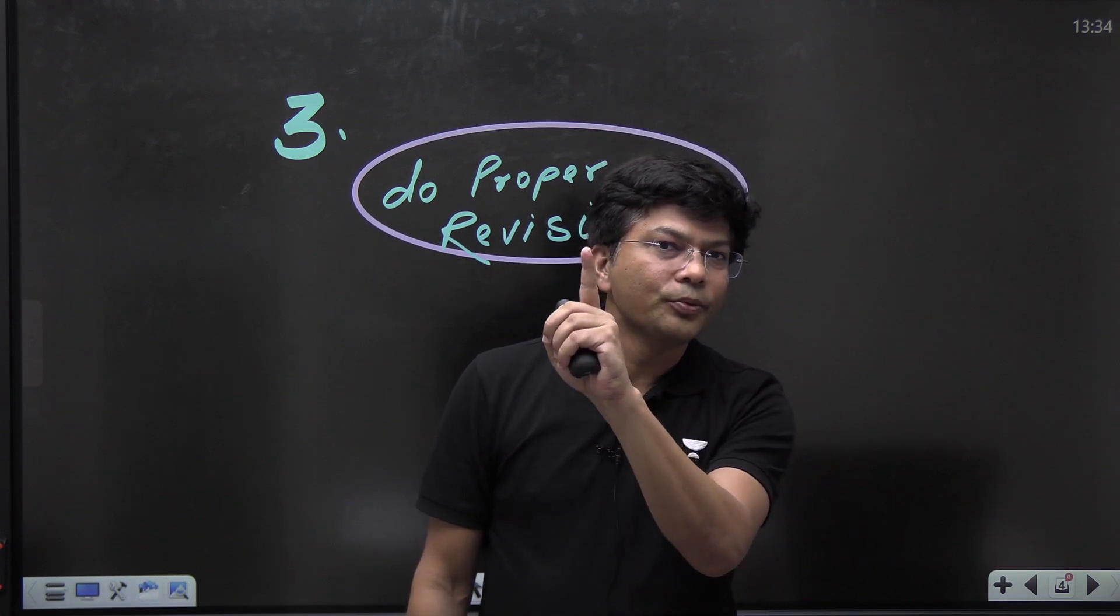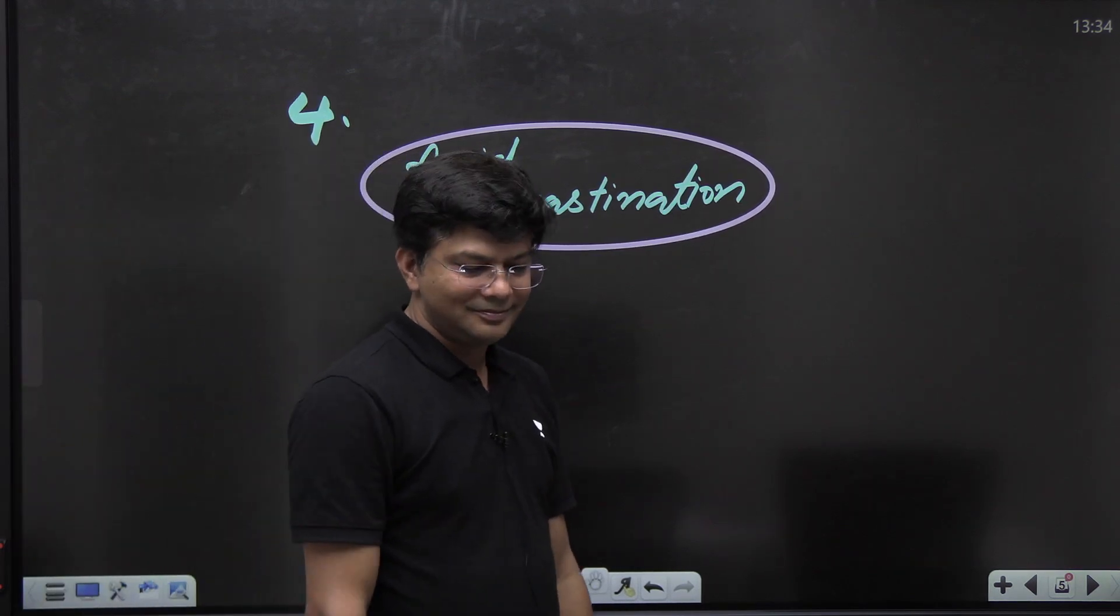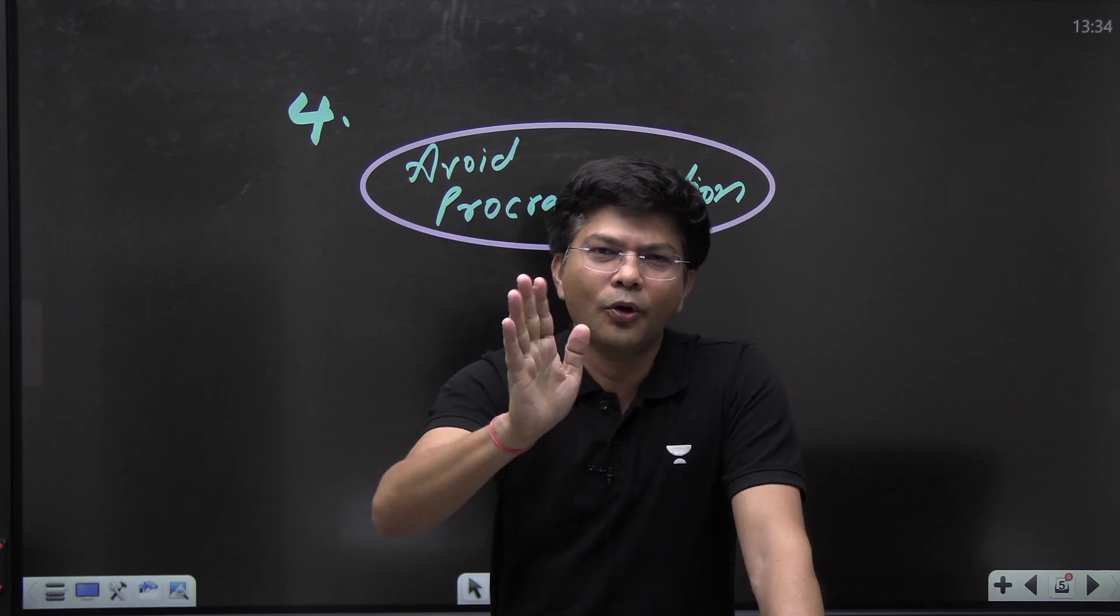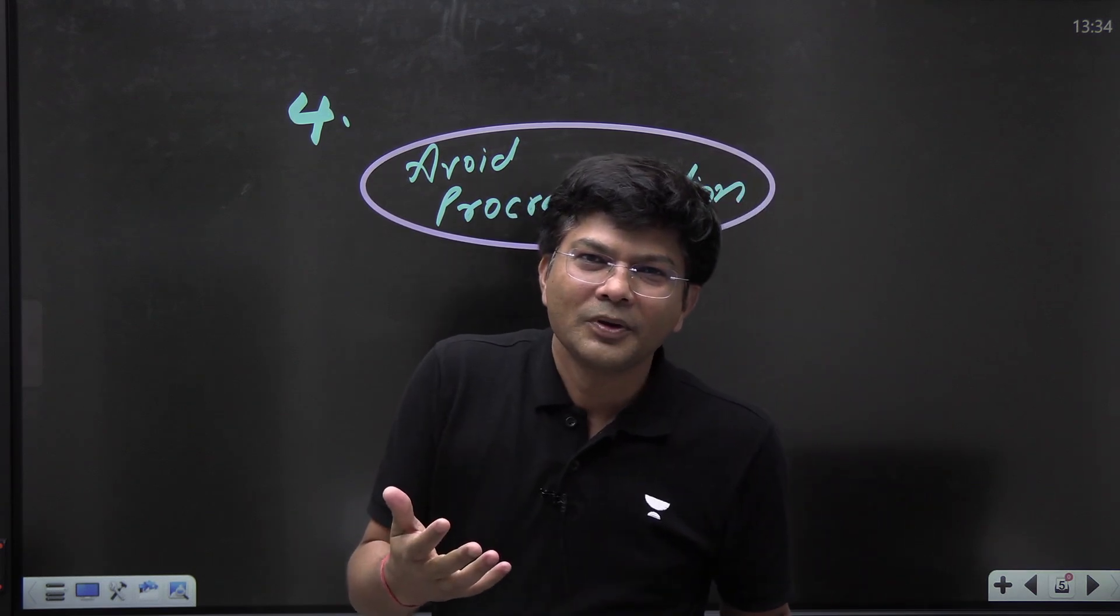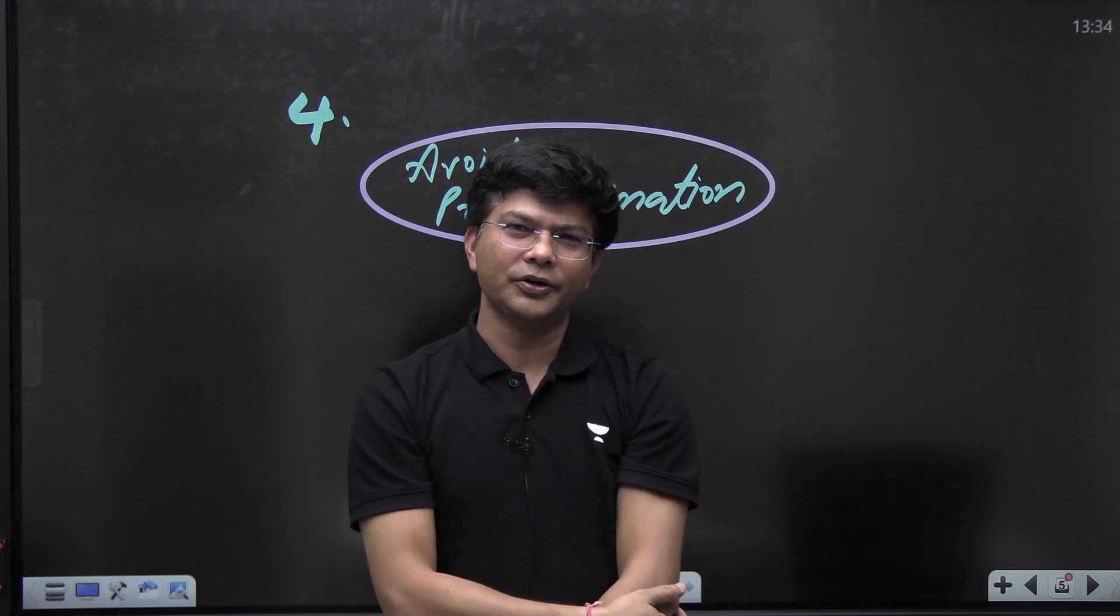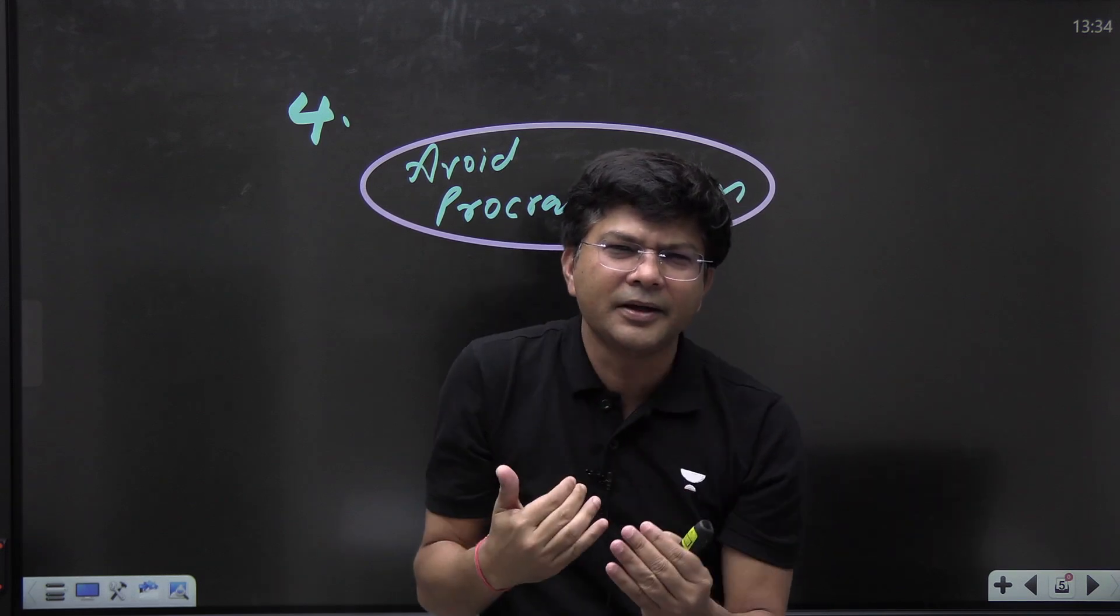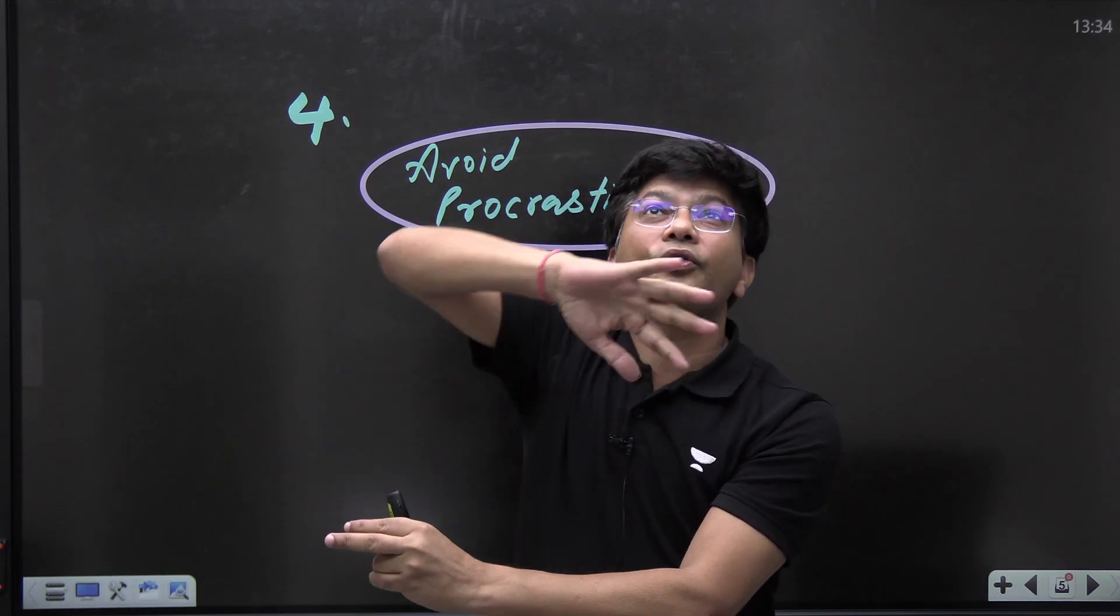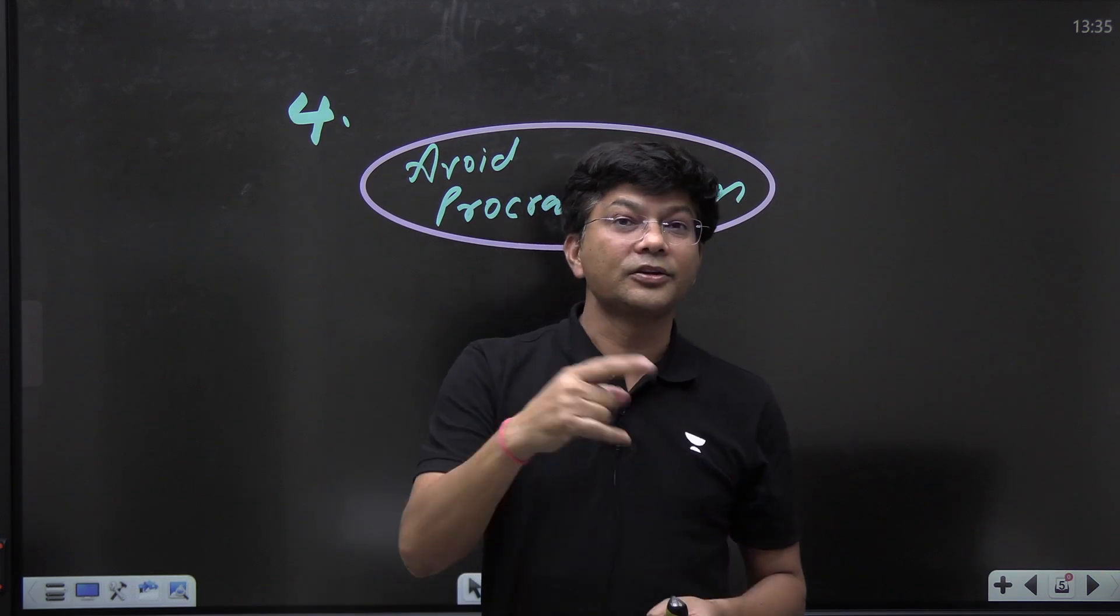Now let me come to the fourth point. Fourth point: avoid procrastination. If you have followed the third point, definitely this point has no meaning for you. Procrastination means delaying something. You are waiting for, oh, when the examination is going to come, I will study the whole night. That approach is not good. Whatever your teacher has taught you today, just try to dissolve it in your blood. And when you are getting the habit of seeing each and everything or trying to find out in the air, this point is meaningless. This is only for those students who are not doing the third point.